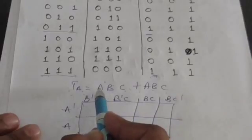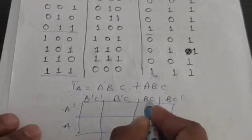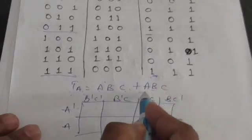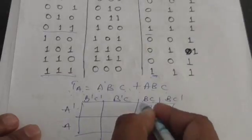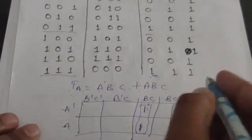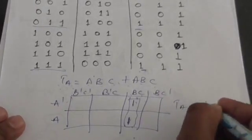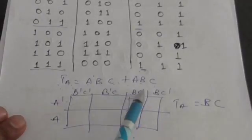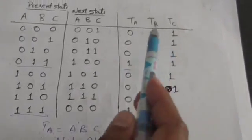From the K-map, TA corresponds to the minterms A'BC and ABC. These two adjacent blocks can be combined, and the only common variable is BC, so TA simplifies to BC.